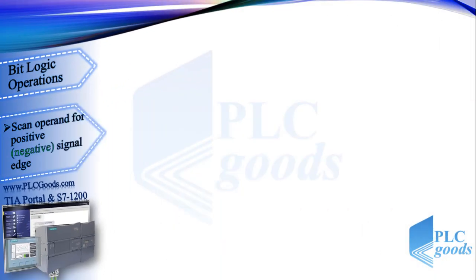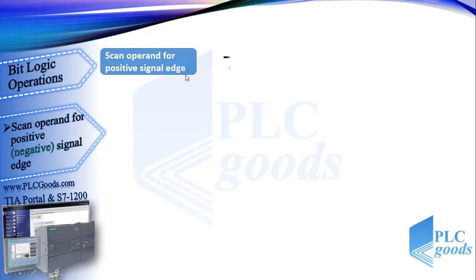Now let's see the first instruction: scan operand for positive signal edge. This is its ladder symbol. As you can see, this instruction needs two addresses. This instruction determines if there is a 0 to 1 change in the state of the I 0.0 address. These instructions need a bit memory address to work — here M 0.0 is used — and this is its FBD symbol.